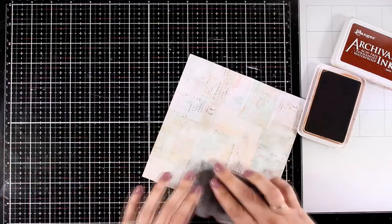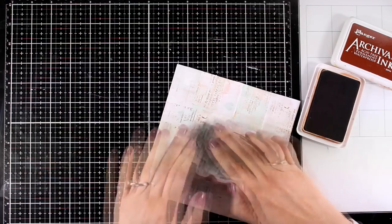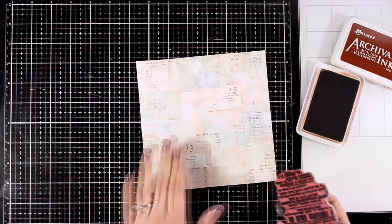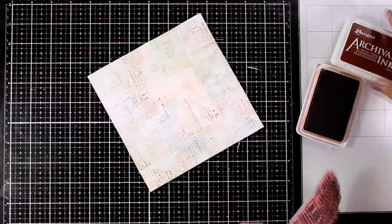I am going with Archival Ink which is permanent and the color is sepia. I know that I will be using browns on my project, so I know that this is going to blend nicely with the rest of the elements.